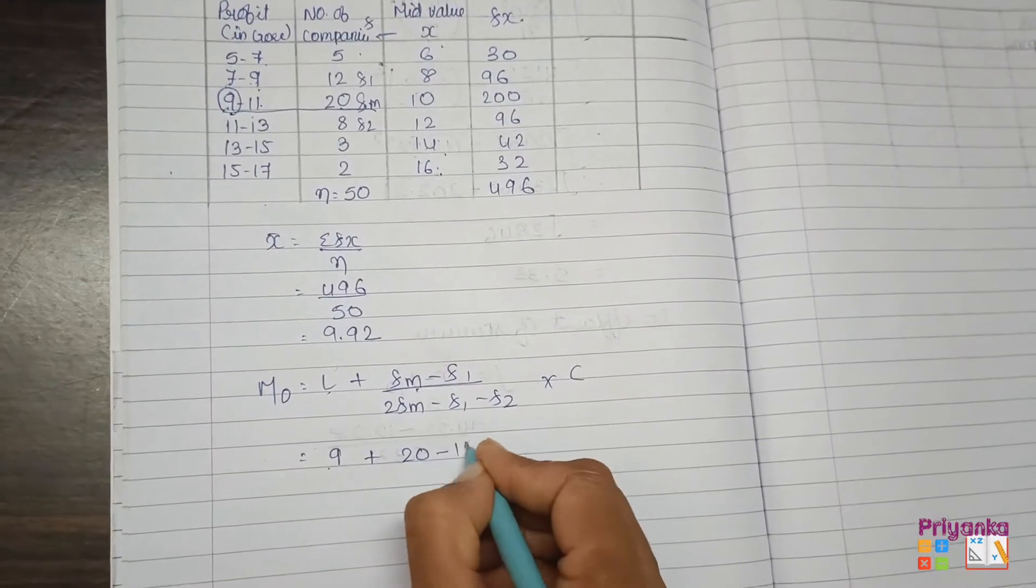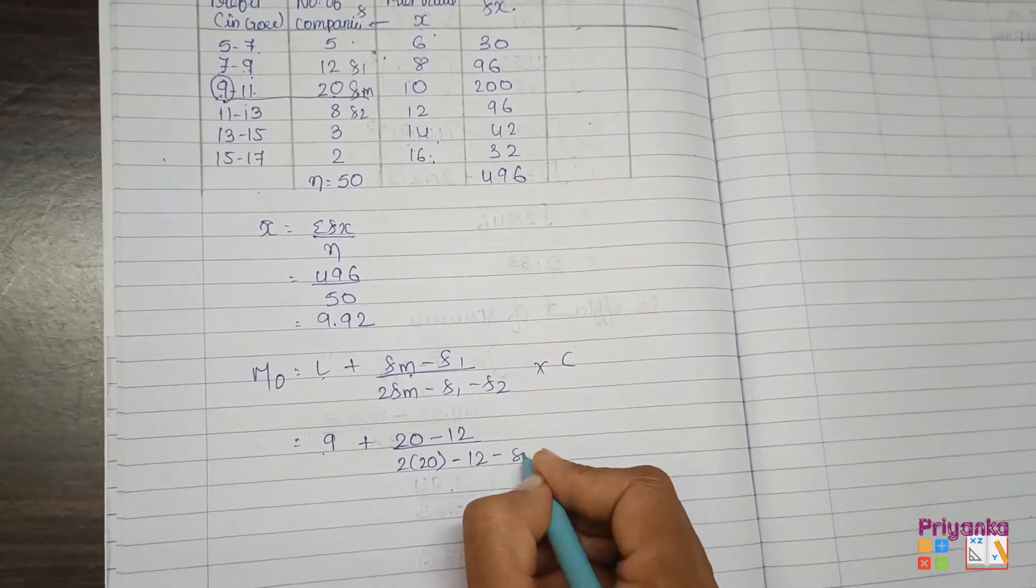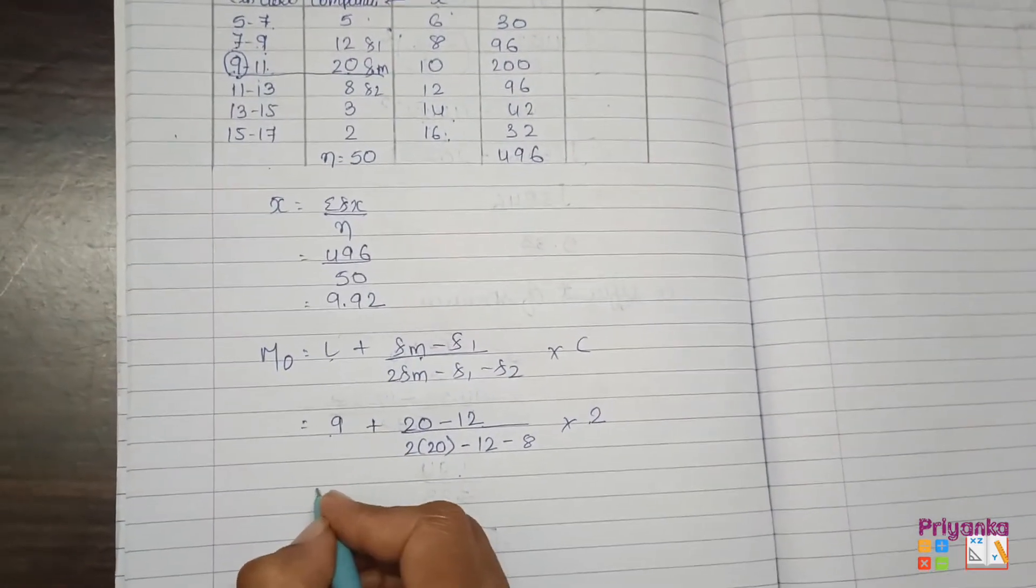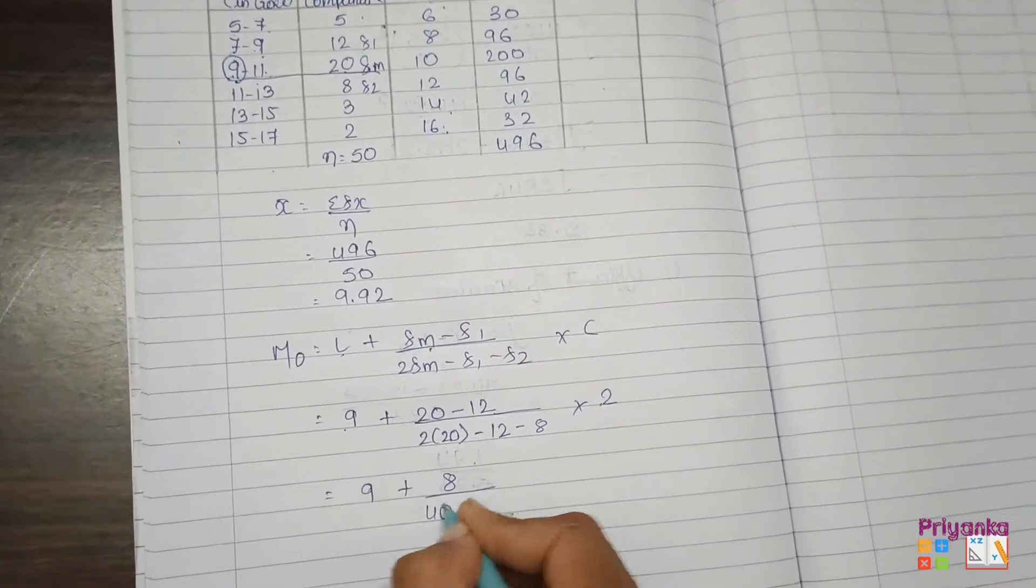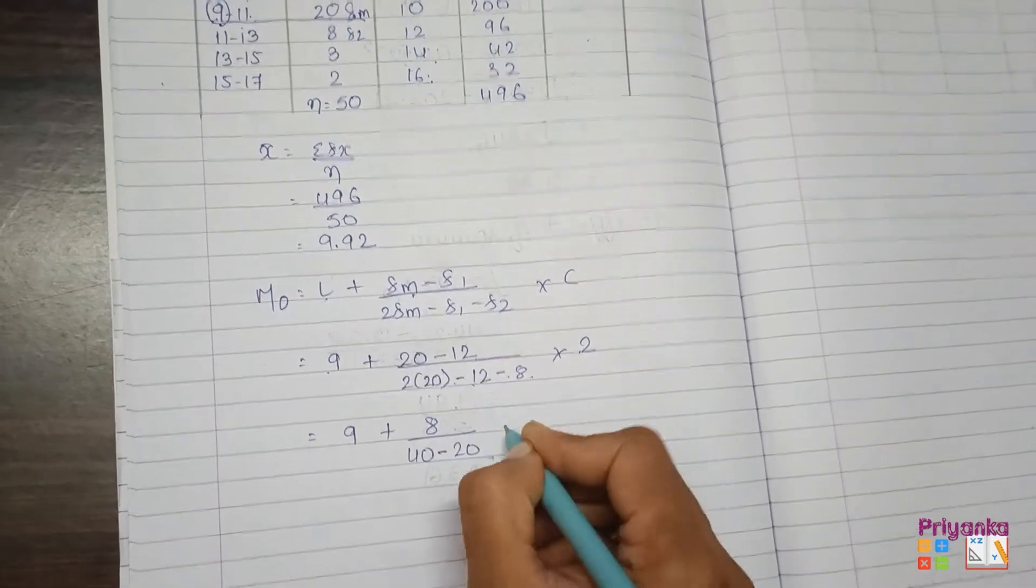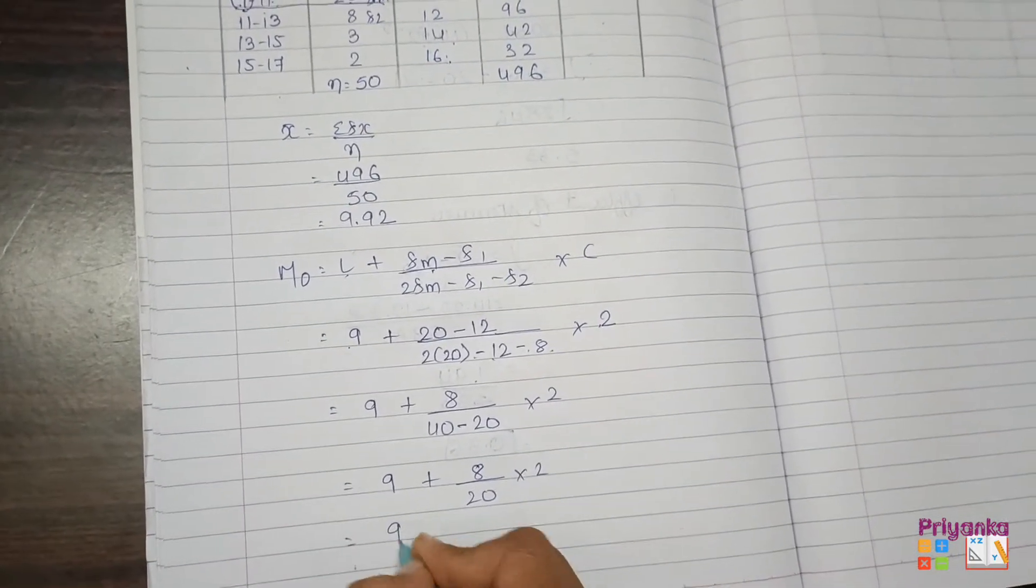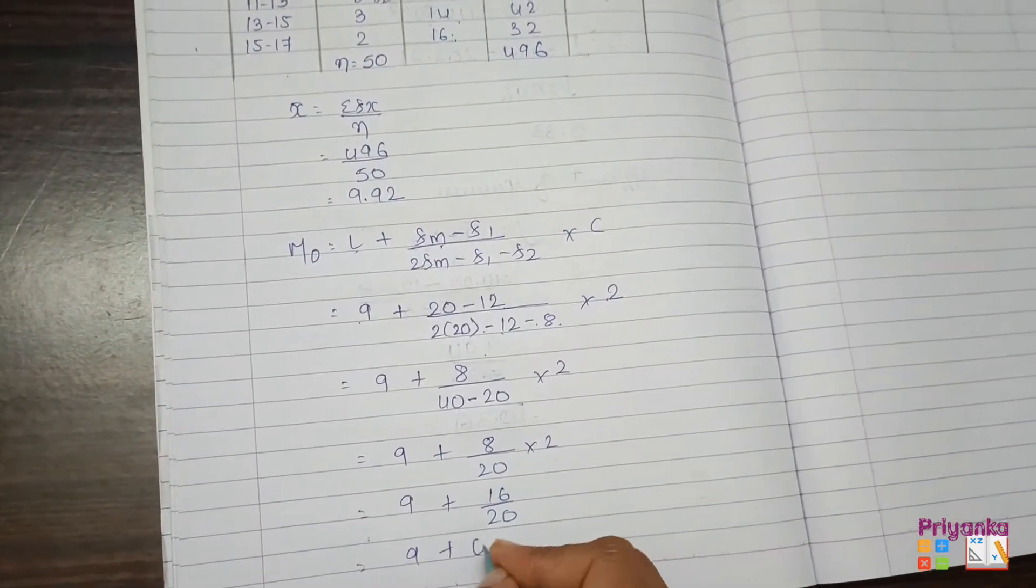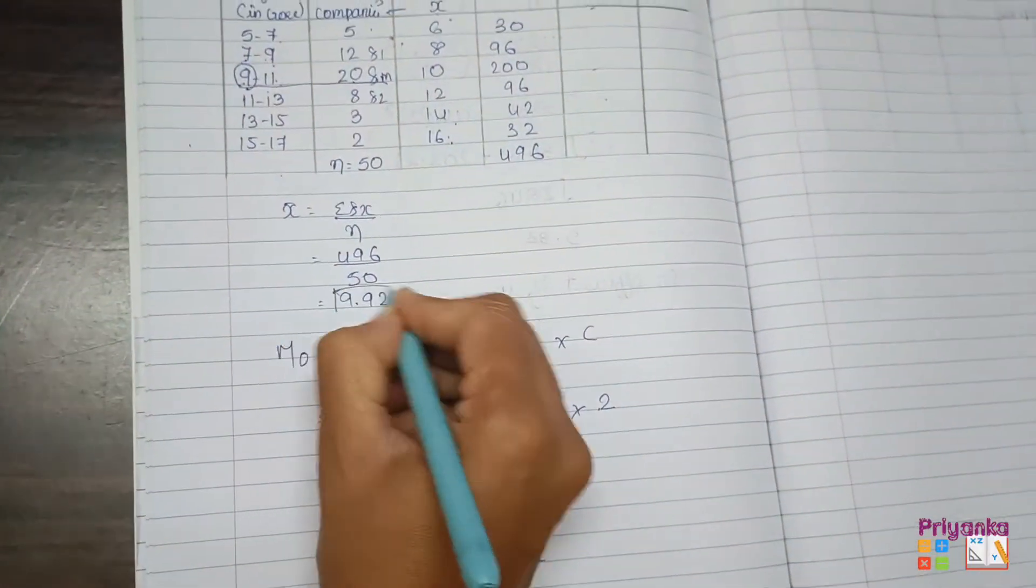So L is 9, fm is 20, f1 is 12, f2 is 8, and class length c is 2. Putting in formula: 9 plus (20 minus 12) divided by (2×20 minus 12 minus 8) into 2. That's 9 plus 8 divided by (40 minus 20) times 2. 9 plus 8 divided by 20 into 2. 9 plus 8/20 equals 9 plus 0.8 equals 9.8. That's the mode.